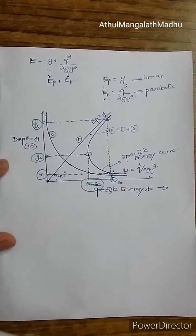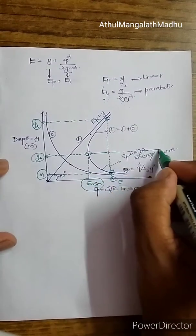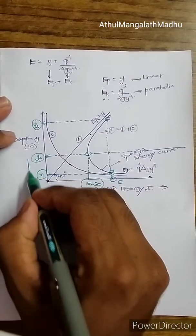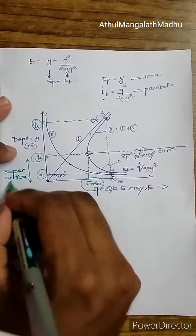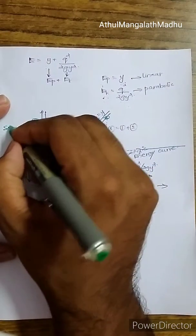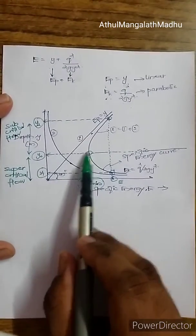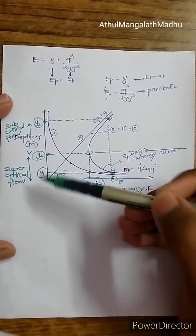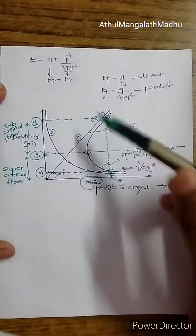Drawing a line at the critical depth yc: all depths below yc correspond to supercritical flow, and all depths above yc correspond to subcritical flow. The point of minimum energy E_min corresponds to the critical depth, which you must keep in mind.